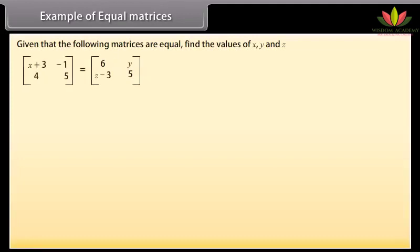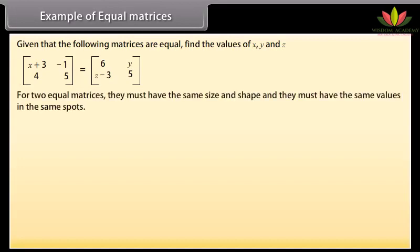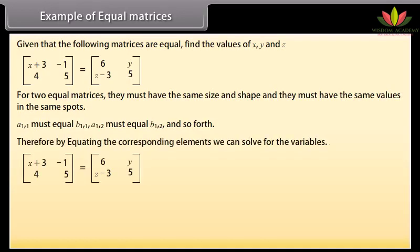Example of equal matrices. Given that the following matrices are equal, find the values of x, y, and z. For two equal matrices, they must have the same size and shape and the same values in the same positions. By equating corresponding elements: x + 3 = 6, so x = 3; y = −1; z − 3 = 4, so z = 7.